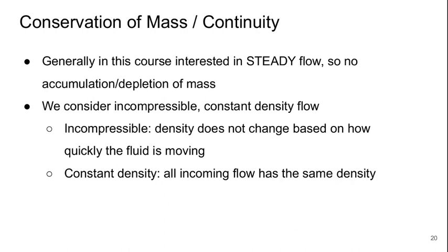You may have thought that these two things were the same before, but incompressible flow means that the density does not change based on how quickly the fluid is moving. Constant density flow means that all the incoming flow has the same density. It's possible to have incompressible variable density flow if there's an initial density gradient in the fluid.